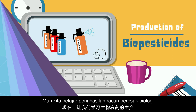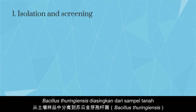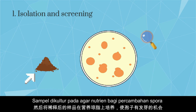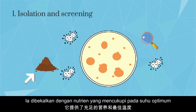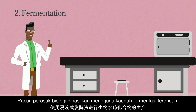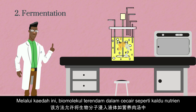The first step is isolation and screening of Bacillus thuringiensis. Bacillus thuringiensis was isolated from a soil sample. The diluted sample was then cultured on nutrient agar to give the spores a chance to germinate on media with adequate nutrients and at optimal temperature. The second step is fermentation. Production of biopesticide compounds was conducted using the submerged fermentation method.